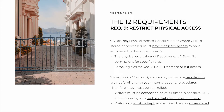9.3 is about restricting actual physical access. Sensitive areas where cardholder data are stored or processed must have restricted access. While 9.1 established that there must be access control so you're aware of who enters, this sub-requirement is about minimizing who enters. It's the physical equivalent of requirement 7 — minimizing who accesses each physical set of data, each room — following the principle of least privilege. Decrease or cut access whenever possible: if an employee doesn't need access to a room, don't allow them in.